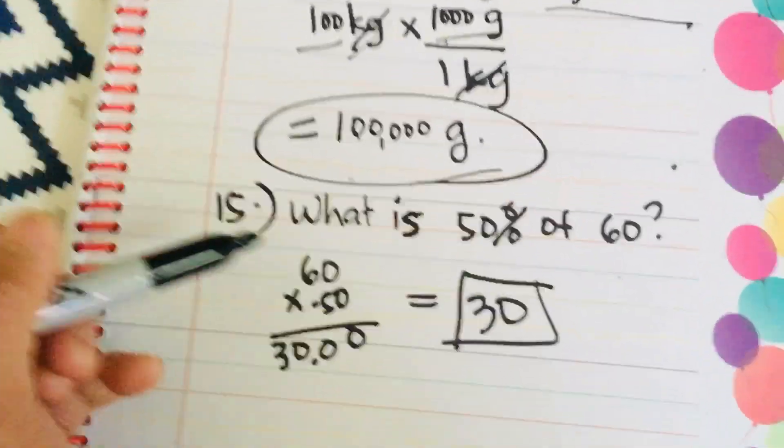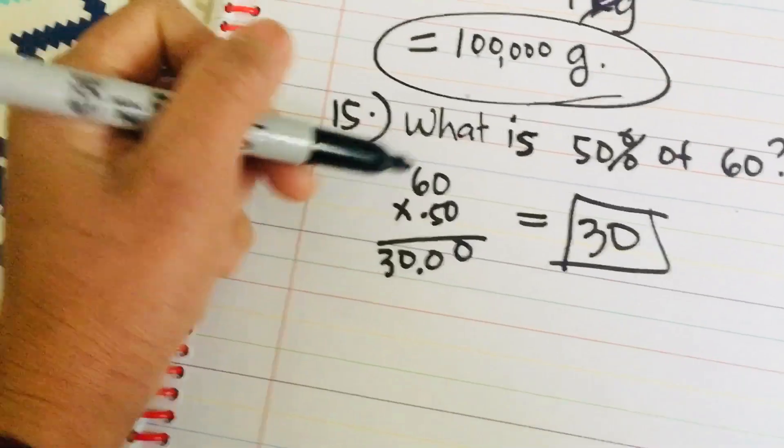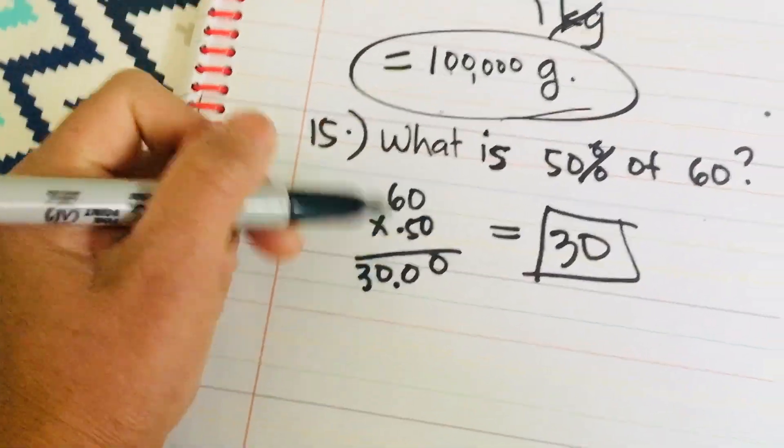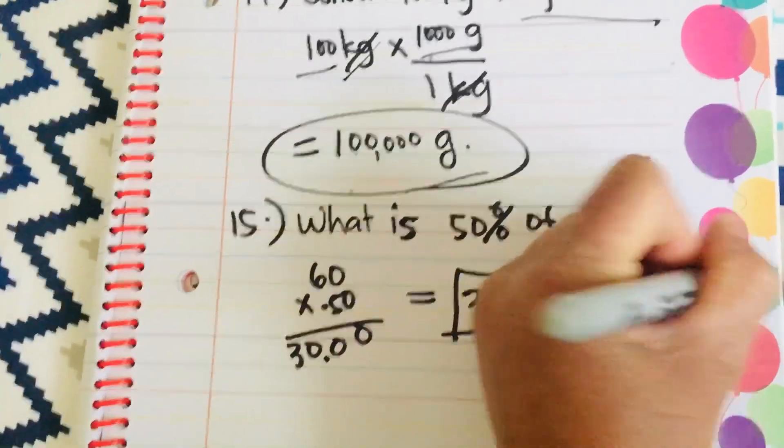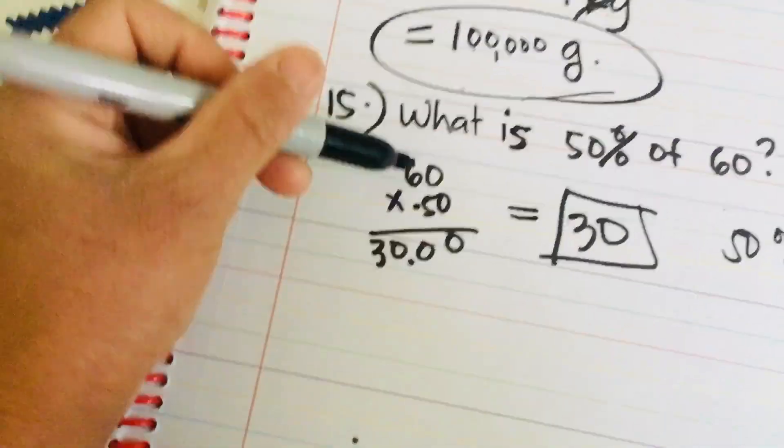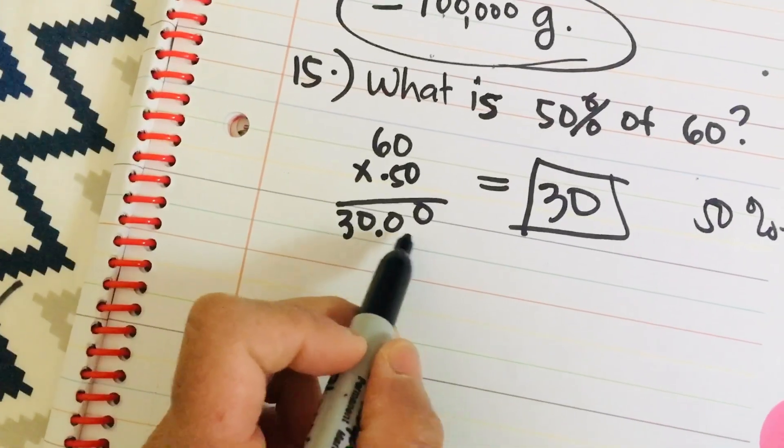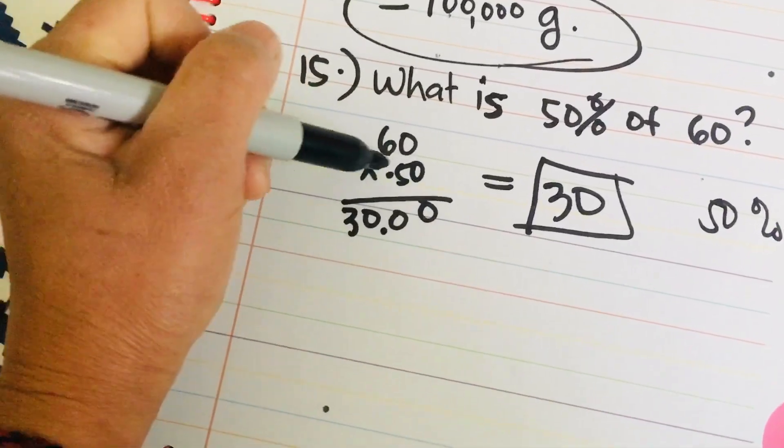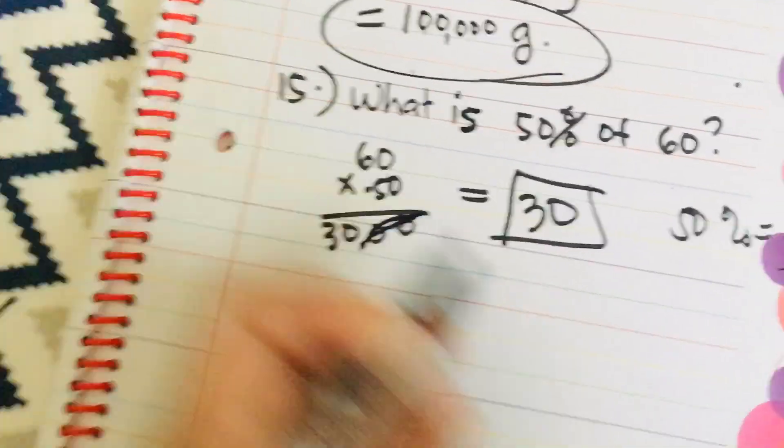Okay, last one. What is 50% of 60? This is very easy. Just multiply 60. 50% is equal to 0.50 in decimal point. So, 60 times 0.50 is equal to 30.00. And then you count the number of decimal places. 1, 2, and then 1, 2, and then cross that out. So, the answer is 30.